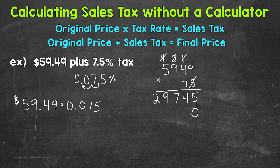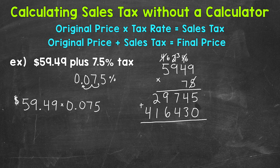We need our zero here because we are moving one place value to the left. And we start with 7 times 9, which is 63. Carry our 6. 7 times 4 is 28 plus 6, 34. 7 times 9 is 63. And then 7 times 5 is 35 plus 6 is 41. So now we add: 5 plus 0 is 5. 4 plus 3 is 7. 7 plus 4 is 11. 7 plus 4 is 11, 1 plus 9 is 10 plus 6 is 16. 1 plus 2 is 3 plus 1 is 4. And then we have a 4 over here.